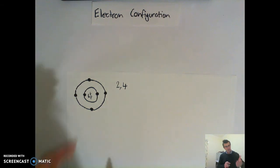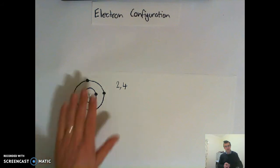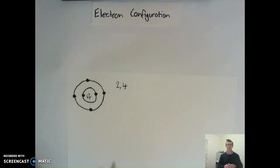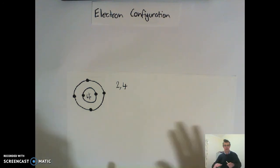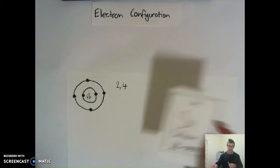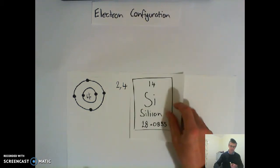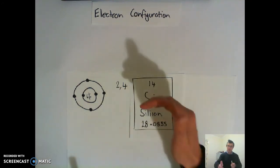Now you should be able to do the electron configuration without having to draw this. You should be able to do this from listing an element from the periodic table, or knowing its symbol or atomic number. Let's take another example — silicon. If I look at silicon on the periodic table, we'll see that silicon is 14, so that's its atomic number.